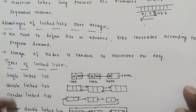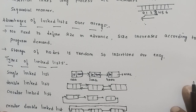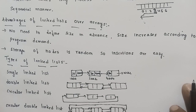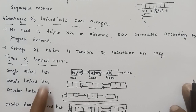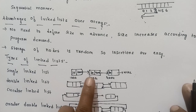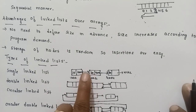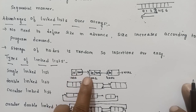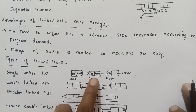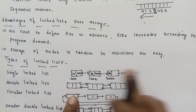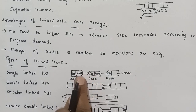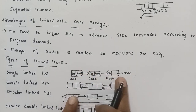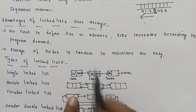Types of linked list: single linked list, double linked list, circular linked list, and circular double linked list. In single linked list, only forward moving or forward traversing is possible. The node is traversed only to the right side. If movement is only in one direction, it is called a single linked list.